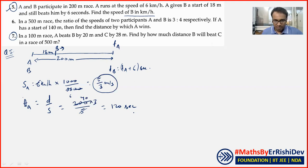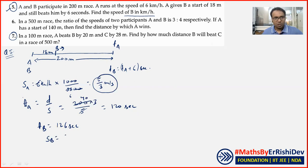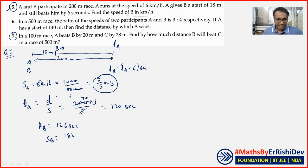اگر A کو 120 seconds لگ رہے ہیں تو B کو 6 seconds extra لگیں گے — یعنی 126 seconds۔ Speed of B = distance upon time = (200 − 18) / 126 = 182/126 metres per second۔